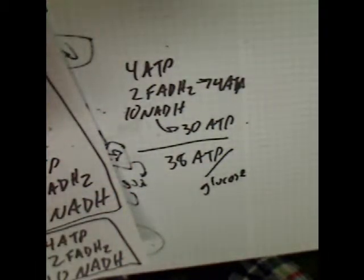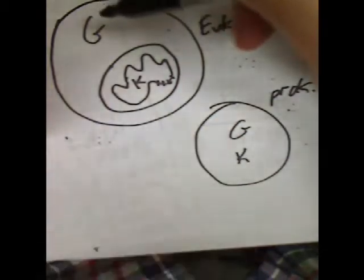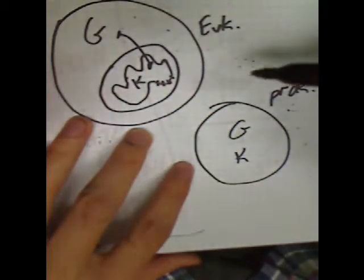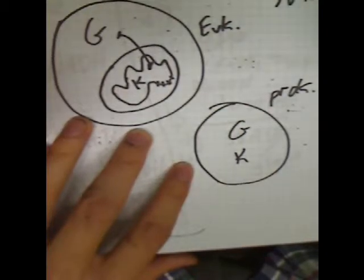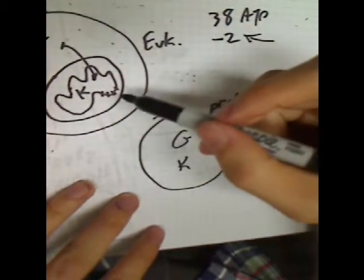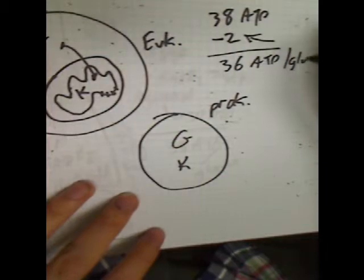There's a tricky situation to mention. In eukaryotes, the Krebs cycle happens inside the mitochondrion, but in prokaryotes it happens in the cytoplasm. In eukaryotes, it costs a couple of ATPs to transport pyruvic acid from the cytoplasm into the mitochondrion. So we actually make 38 minus 2, equaling 36 ATPs per glucose, whereas prokaryotes make the full 38. It's not a big difference, but it's worth keeping in mind.